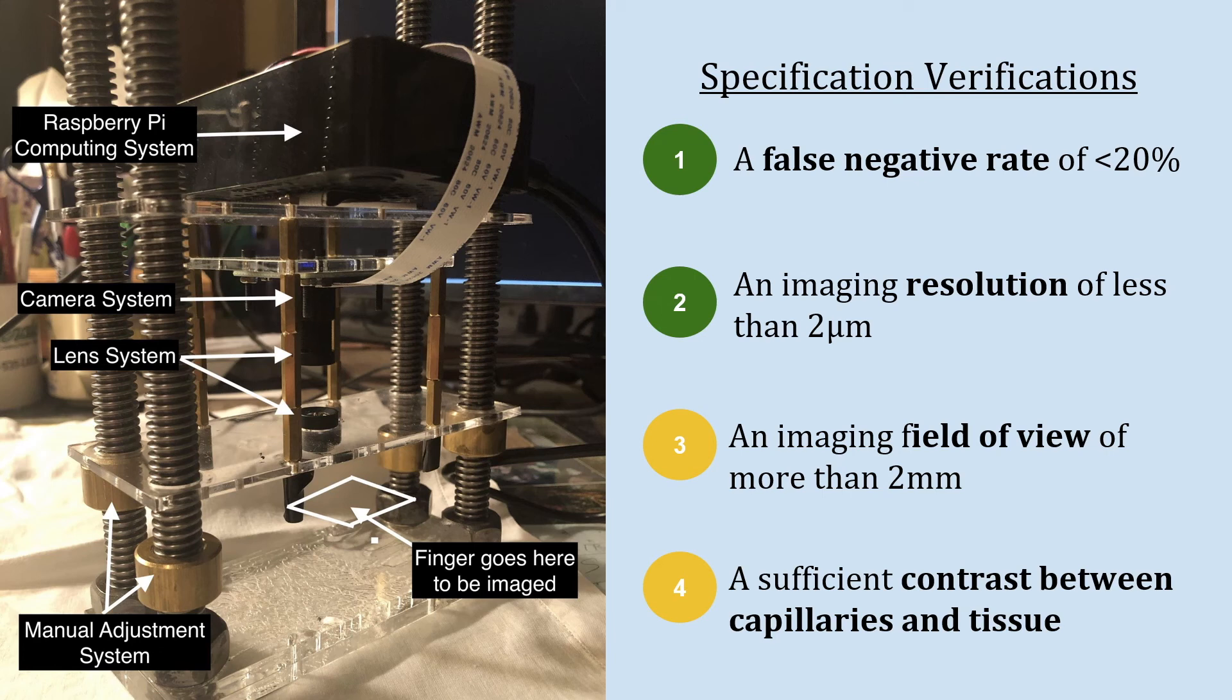The Onchoscope achieved a false negative rate of less than 20% and an imaging resolution of less than 2 microns. In the future, we plan to enlarge the imaging field of view to greater than 2 millimeters and ensure that there is sufficient contrast between capillaries and tissue. With verification specifications met, we look forward to validating the Onchoscope in the intended clinical setting.